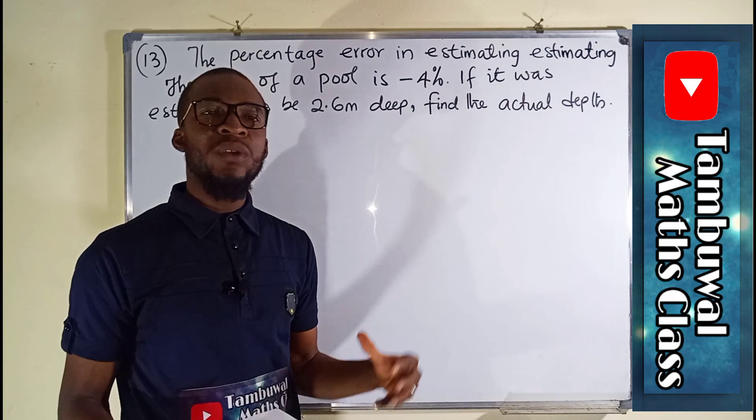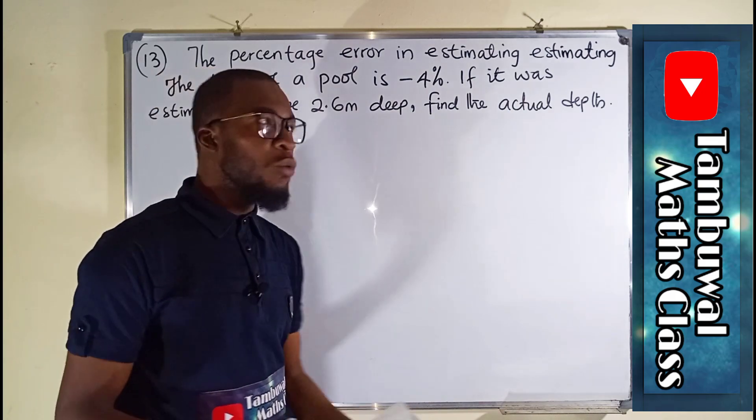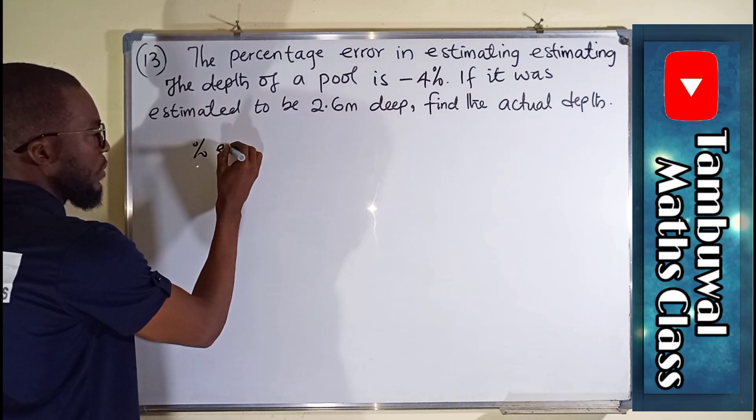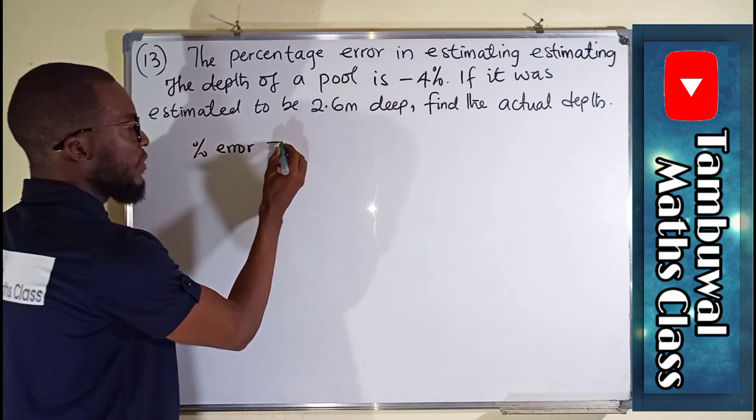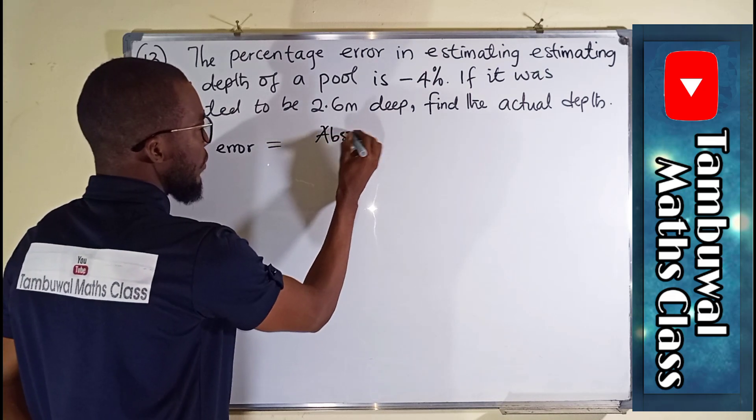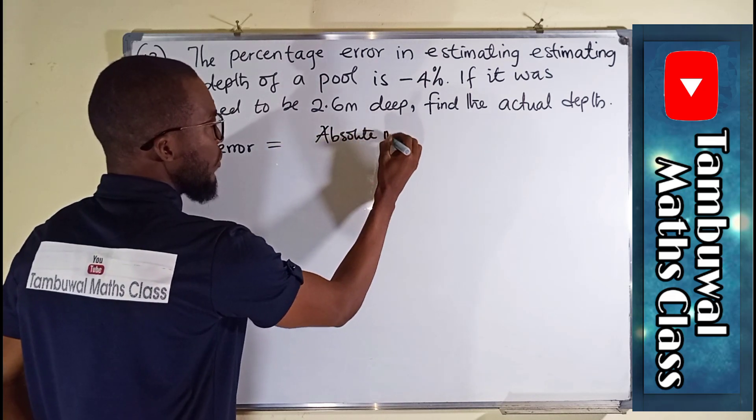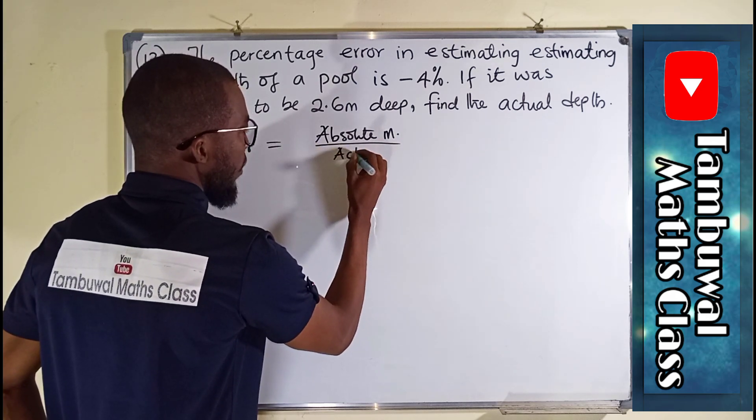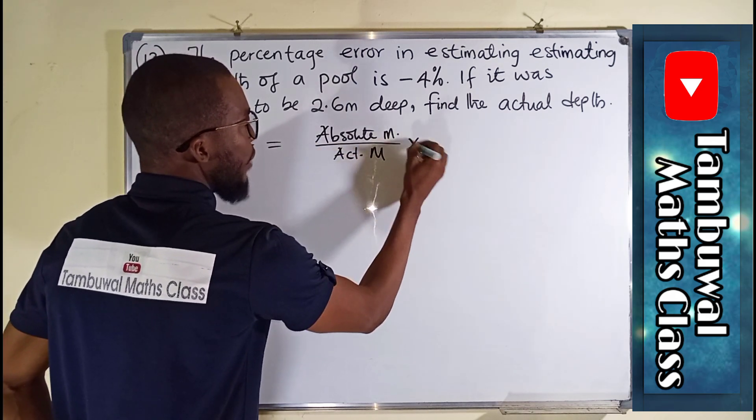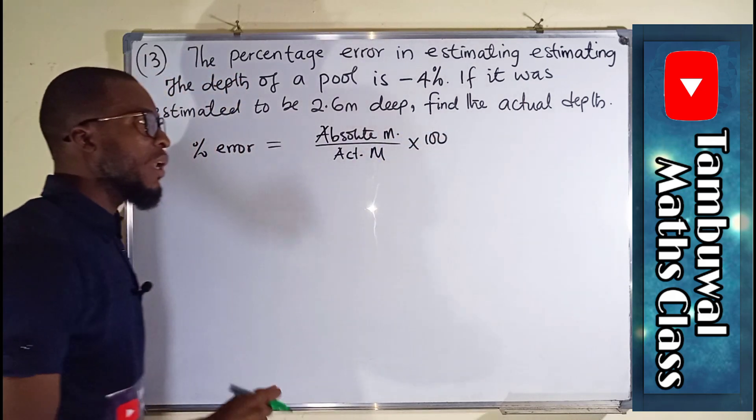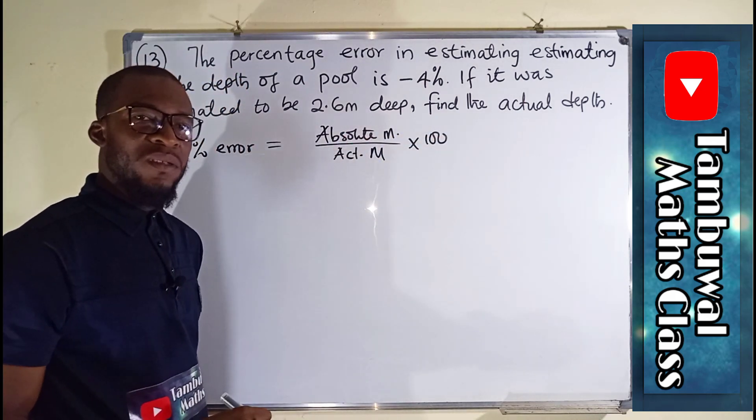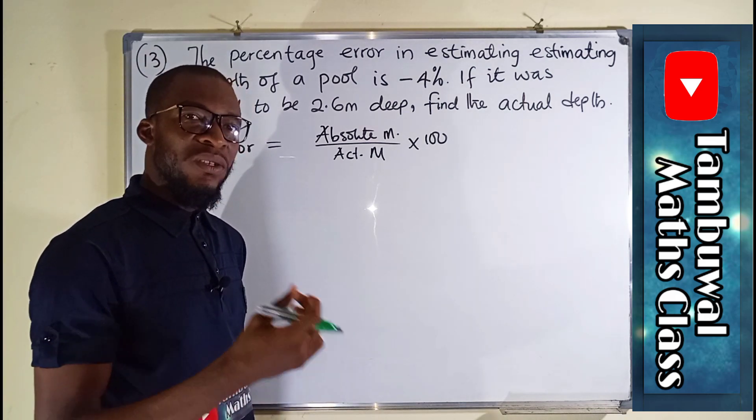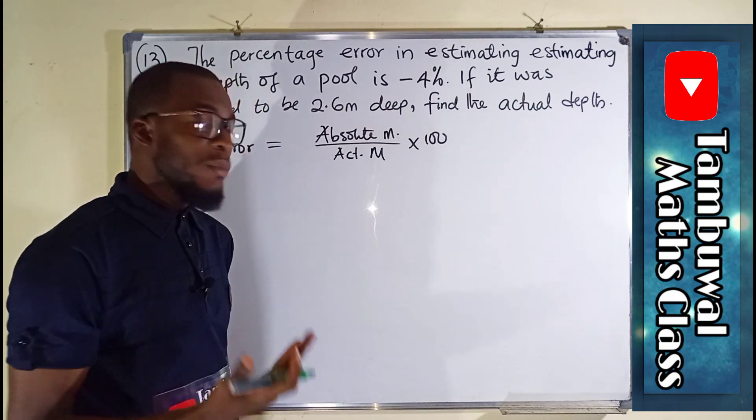So there is a particular formula that will guide us in finding percentage error. Percentage error is equal to the absolute measure over the actual measure times 100. This is the formula.